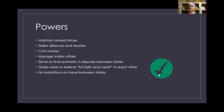The powers granted to the federal government under the Articles of Confederation included: maintaining armed forces, making alliances and treaties with other countries, coining or creating money, managing Indian affairs, and serving as the final authority in disputes between states. States were to extend full faith and credit to each other, and there were to be no restrictions on movement or travel between states.